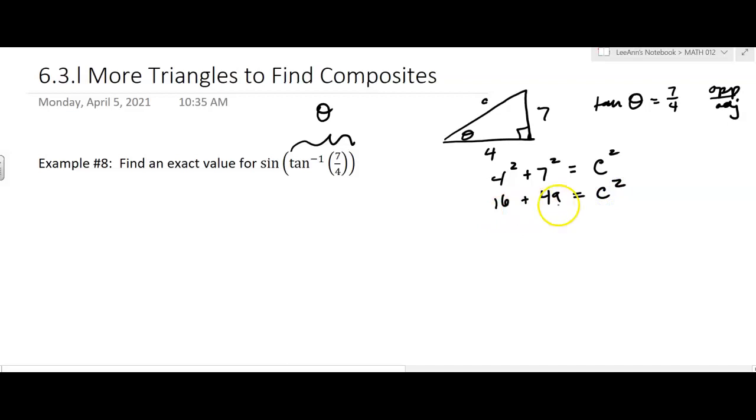And 16 and 49 is 65. And so the square root of 65 is going to equal C.